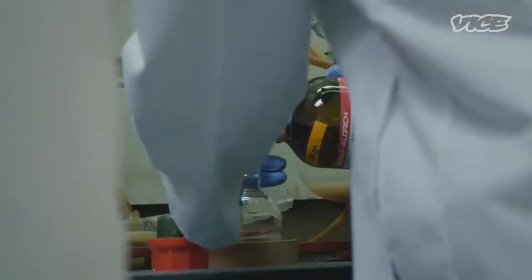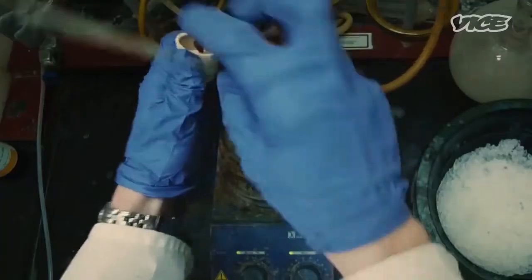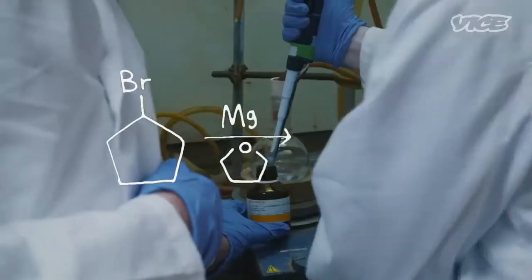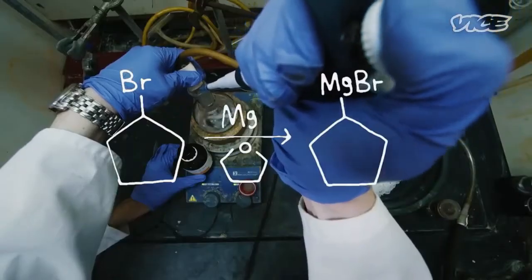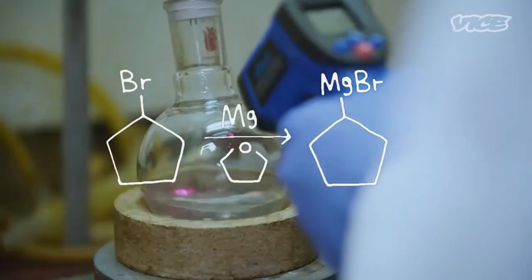Pulverized magnesium turnings are suspended in THF with iodine crystals. Bromocyclopentane is added dropwise, forming the Grignard reagent cyclopentyl magnesium bromide in an exothermic reaction. A great way of making carbon-carbon bonds.